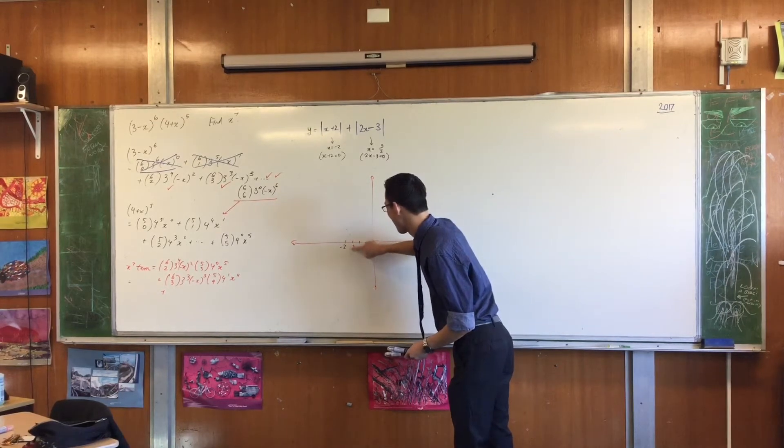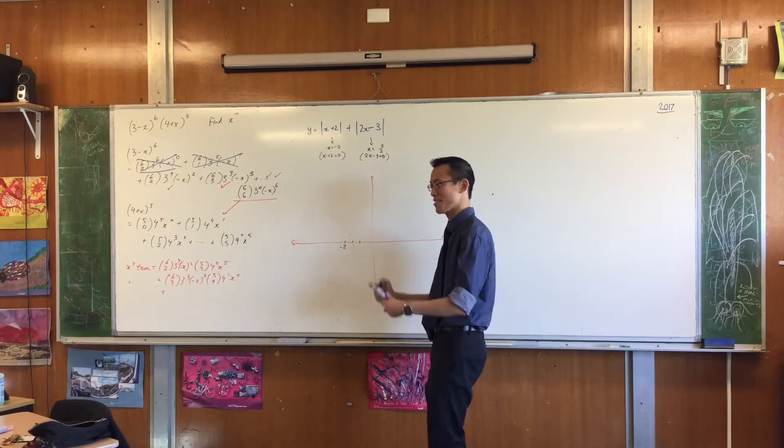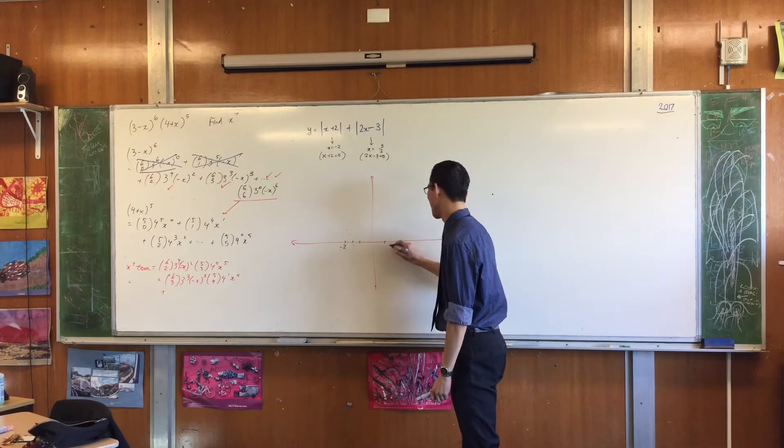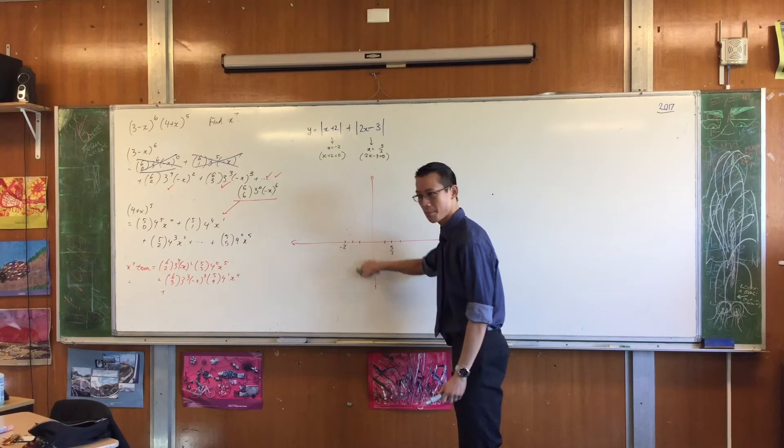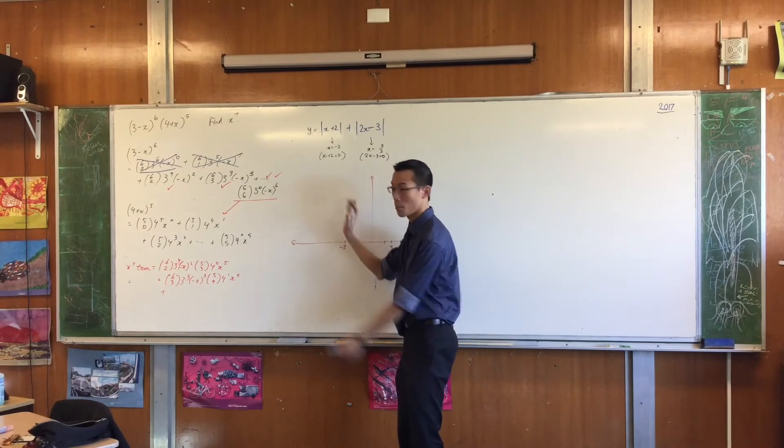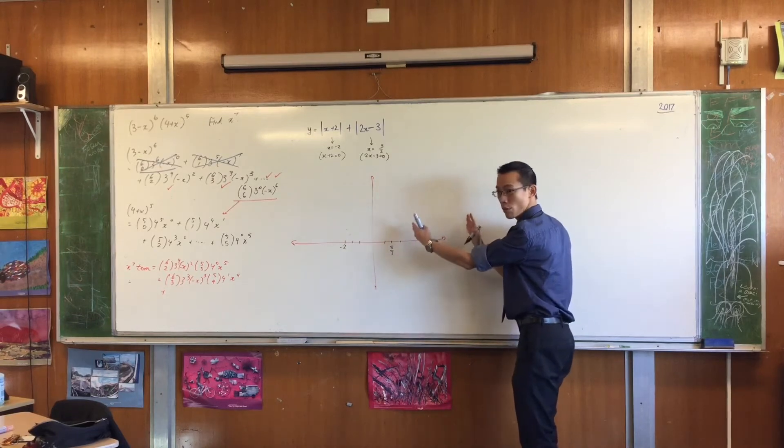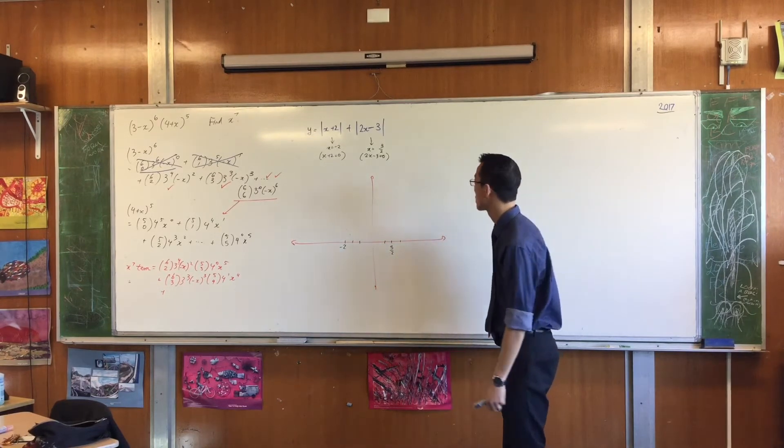So this will not be minus three on two, this will be three on two, because that is when two x minus three is zero. This will give us something a little more interesting to graph. We do this all the time. It's like I made up a question. Oh, this question's terrible. So if that's one and that's two, there's three on two. In other words, to the left of negative two, something is happening. Between these, something else is happening. And then to the right of three on two, some final third thing is happening. So let's look at each case.